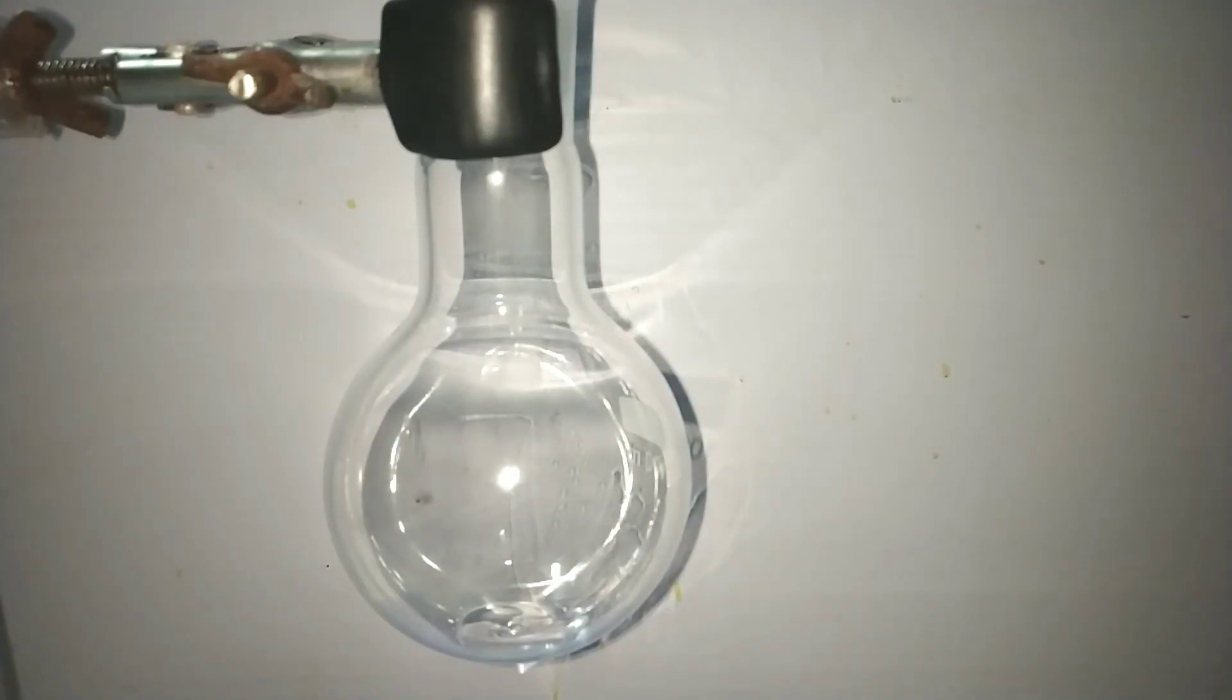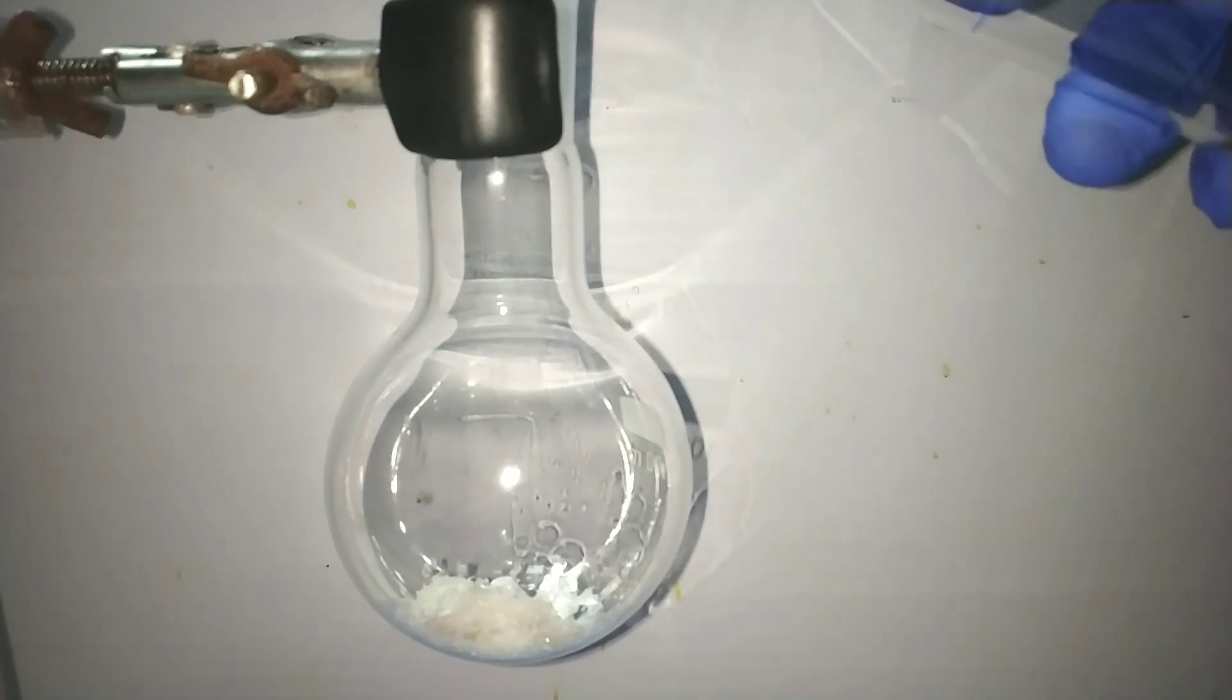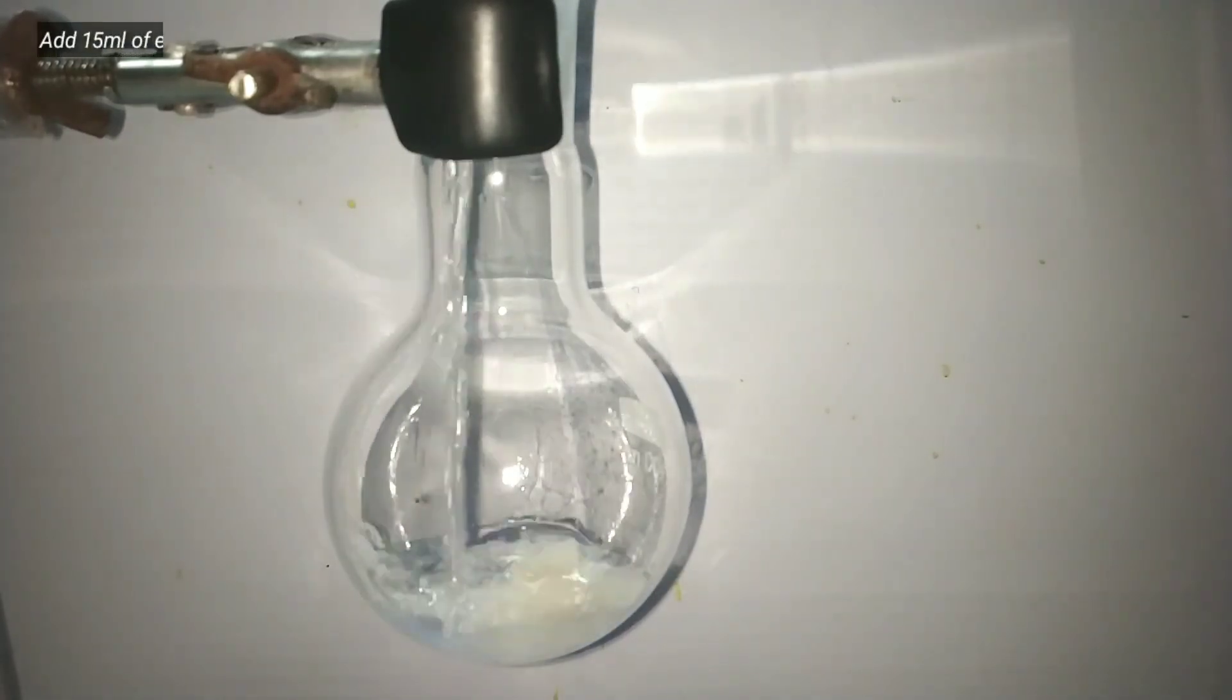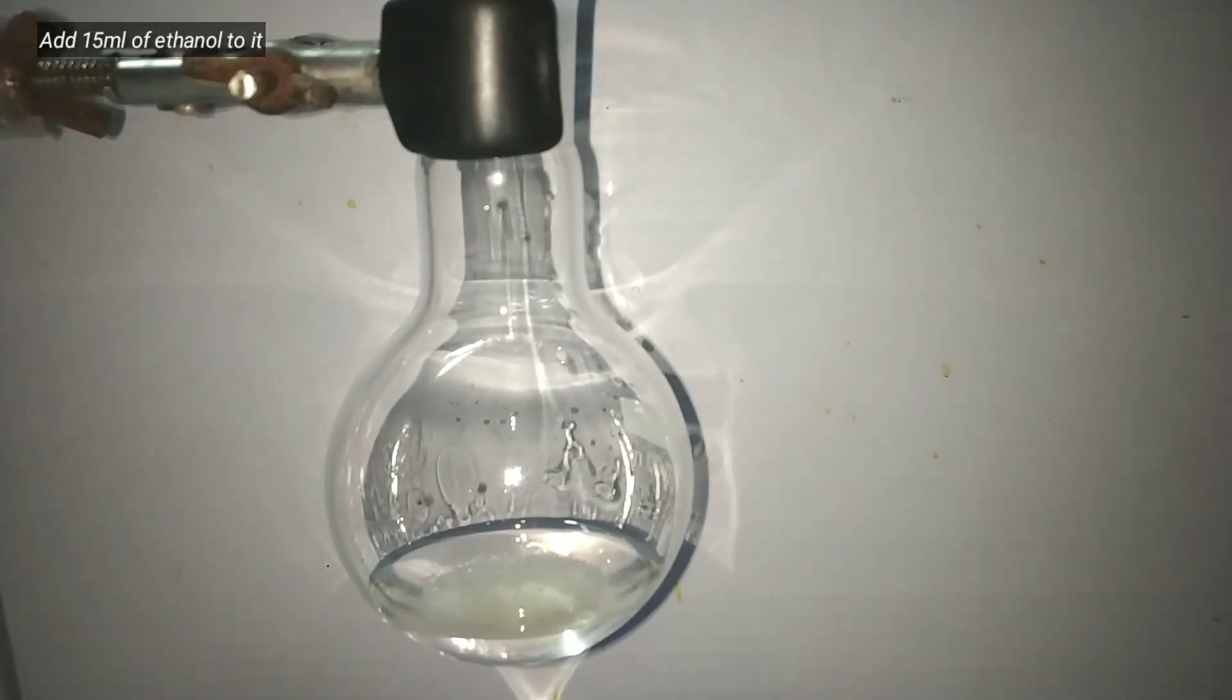Start by taking a small 100 ml round bottom flask and add 1 gram of acetanilide into it. Acetanilide was synthesized in one of my previous videos. I will put a link to that in the description. Now we add 15 ml of 96% ethyl alcohol to the flask.